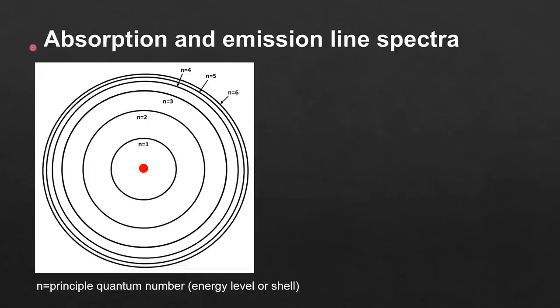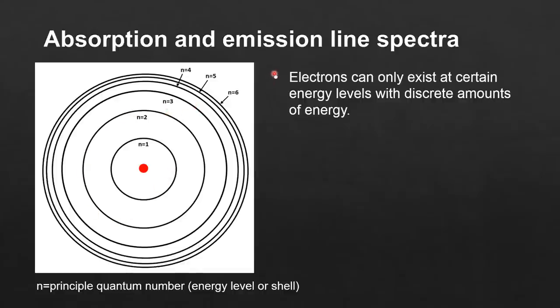In this video we're going to look at absorption and emission line spectra. We'll start with a quick review of the Bohr model of the atom. The protons and neutrons are located in the nucleus of the atom, and the electrons are located in energy levels or shells around the nucleus. Electrons can only exist at certain energy levels with discrete amounts of energy.